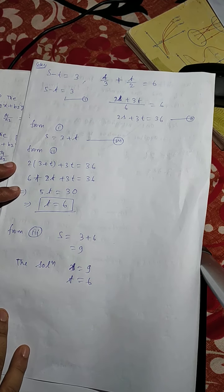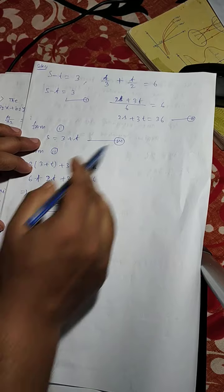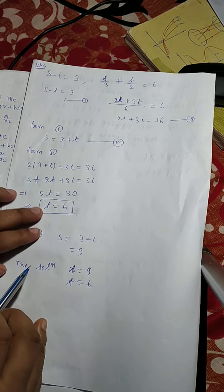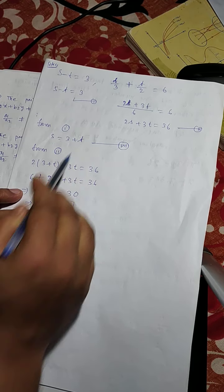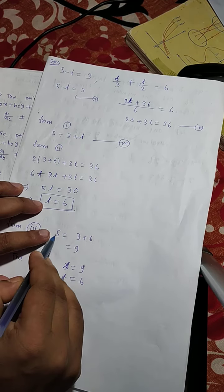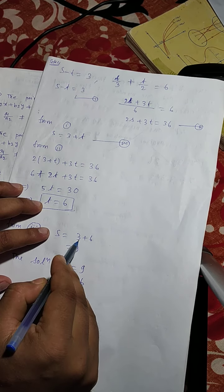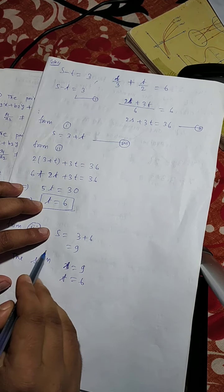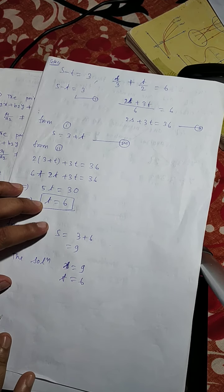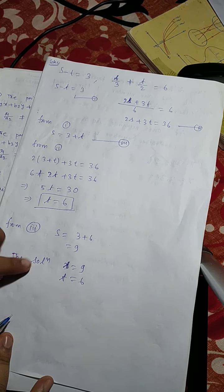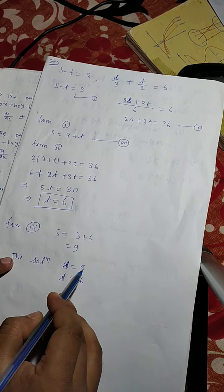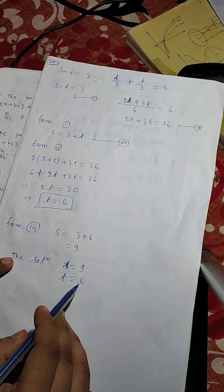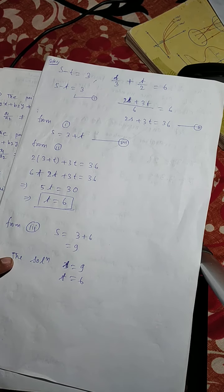Now from equation 3, replacing t by 6: s equals to 3 plus 6, that means s equals to 9. So the solution is s equals to 9 and t equals to 6.